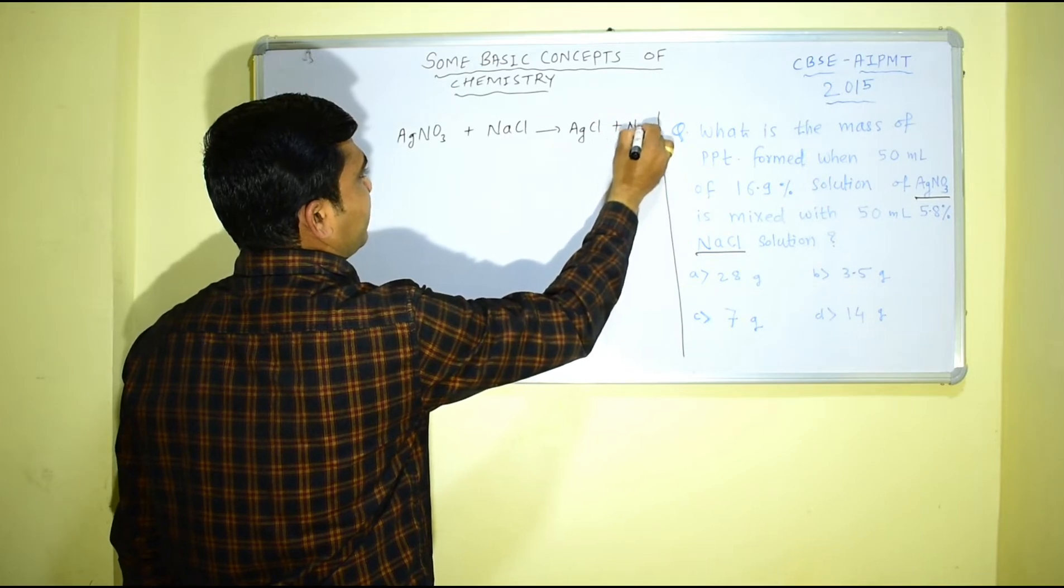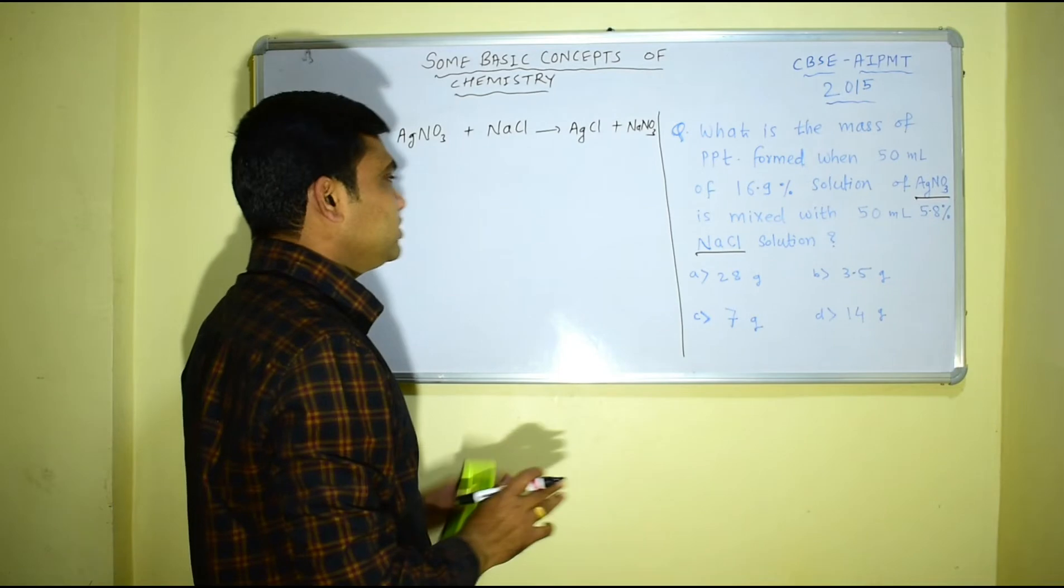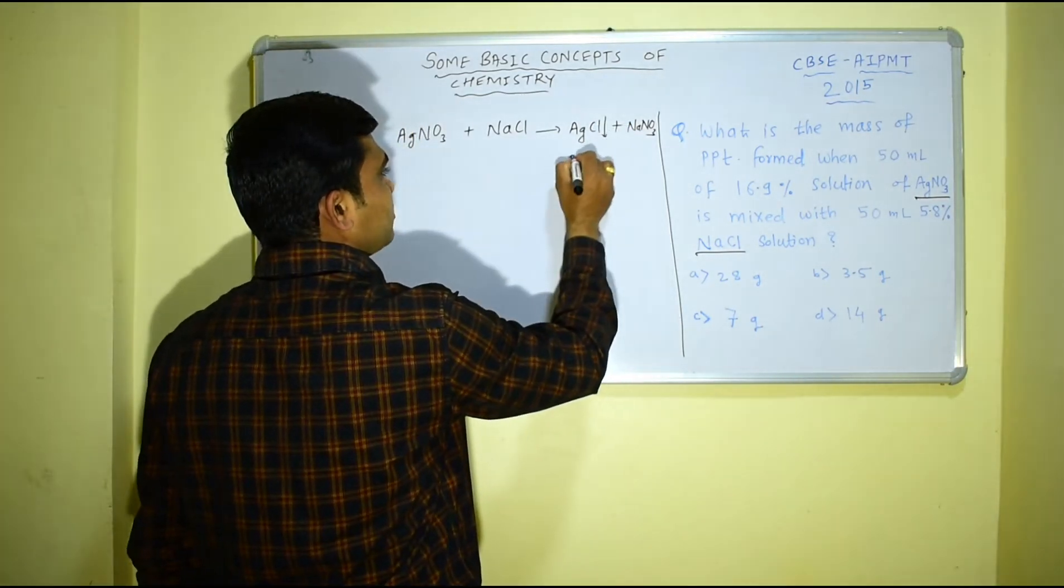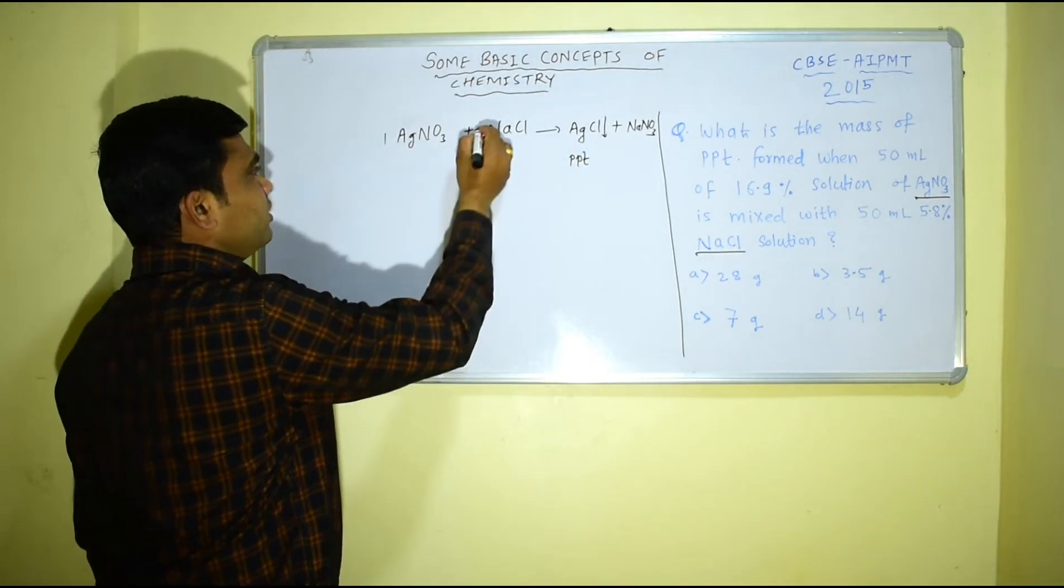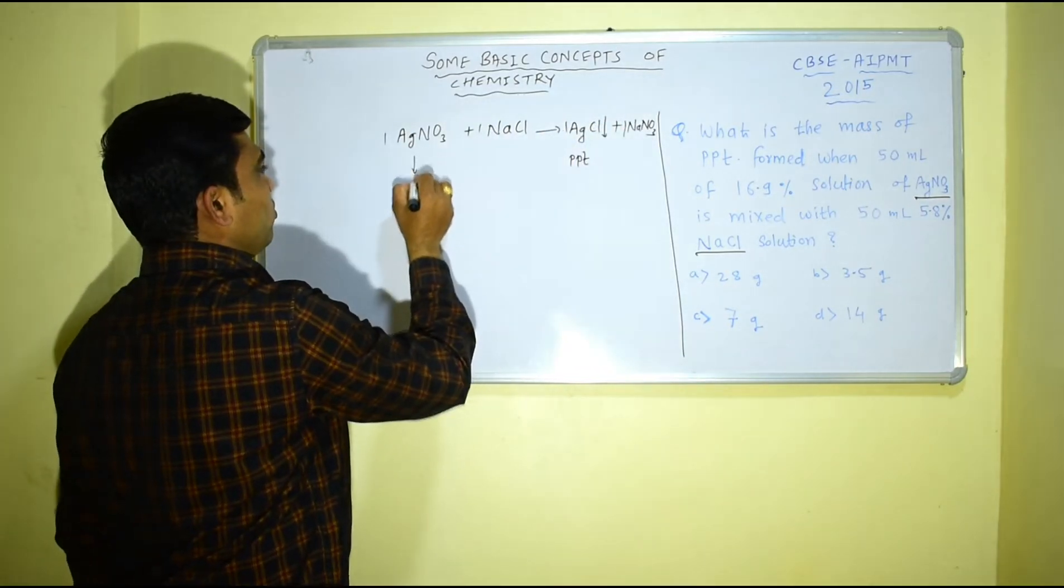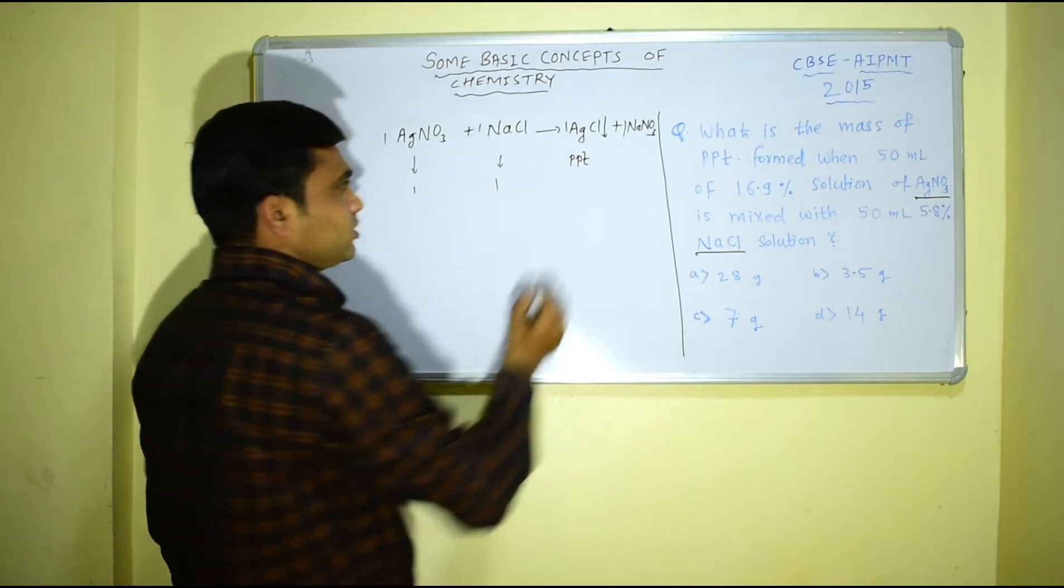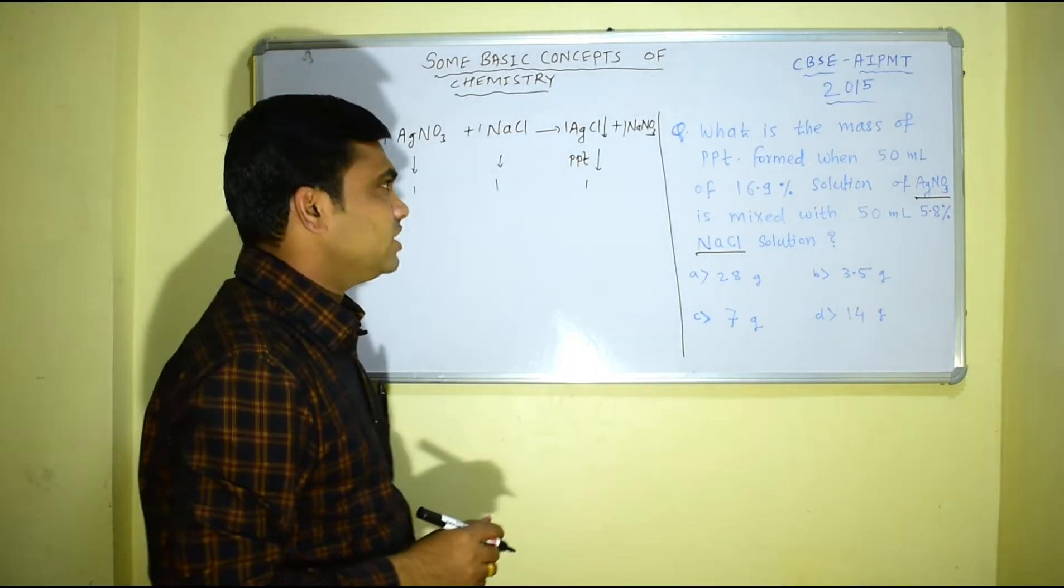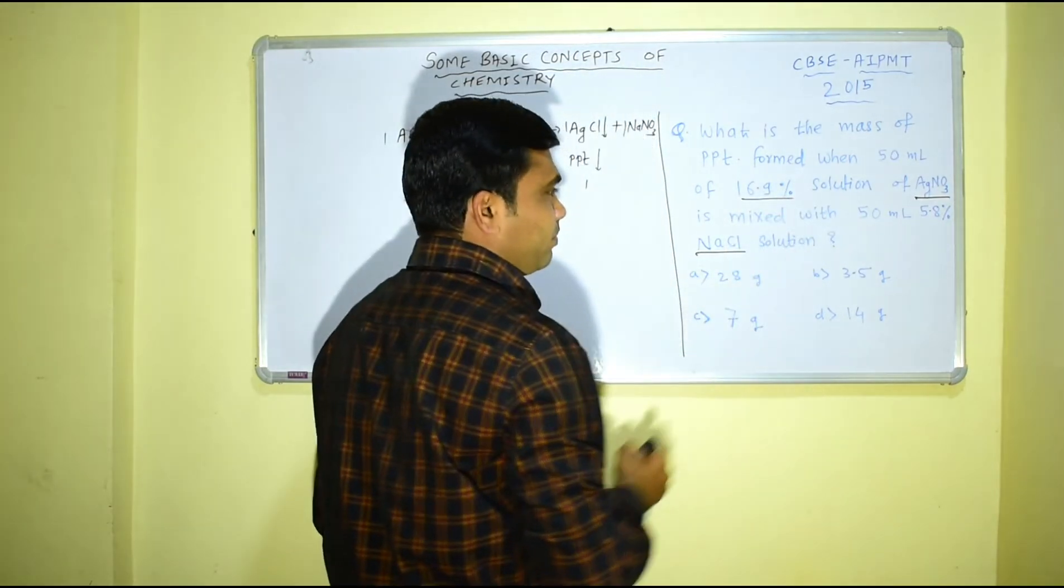And here silver chloride is formed as a precipitate. Now from this stoichiometry we can see clearly that one mole of silver nitrate combines with one mole of NaCl and gives you one mole of AgCl precipitate.